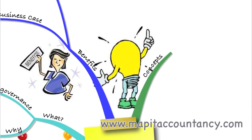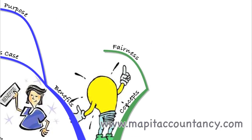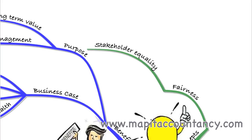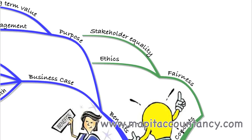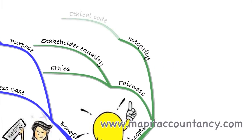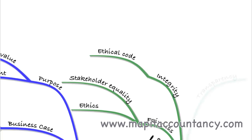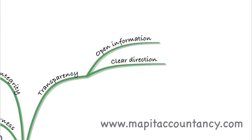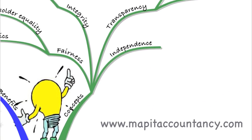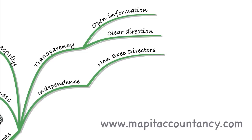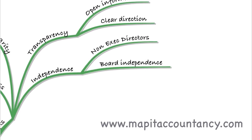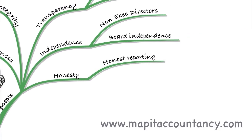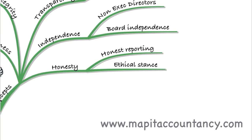Some of the concepts we'll be looking at throughout this module: first, fairness, which looks particularly at shareholder and stakeholder equality. Also ethics and ethical concepts — we'll look at those in detail. When it comes to integrity, there's an ethical code we'll need to investigate in detail. Transparency is a key to good governance, meaning open information and a clear direction set out by the business. We should also have independence, meaning non-executive directors who are independent from the executive directors and don't work for the business, so our board is independent.